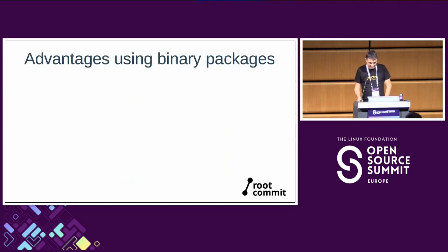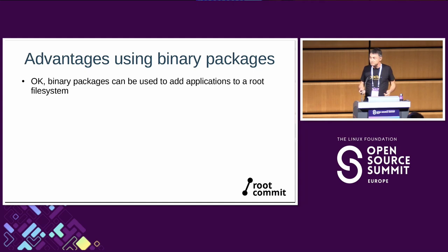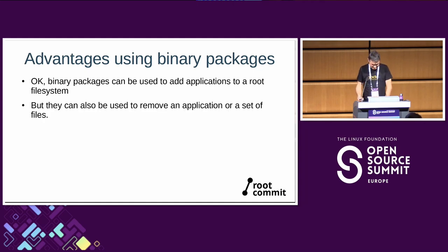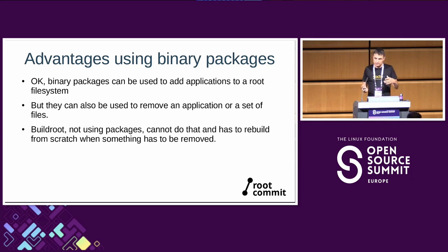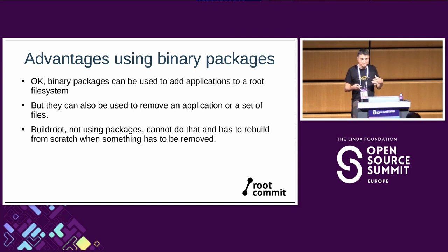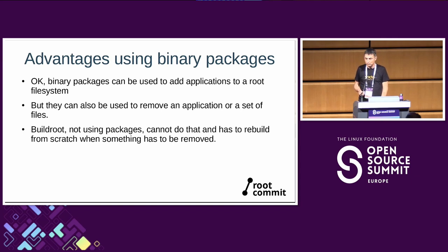Binary packages can be used to add applications into a root file system, but they can also be used to remove stuff — and that's typically what Buildroot can't do. Buildroot doesn't generate intermediate packages, so it has no knowledge of what was installed and therefore can't remove anything. When you want to remove something from a Buildroot image, you have to run make clean and regenerate. With OpenEmbedded, you know what was installed because you still have the package, so you can remove it.